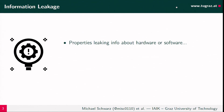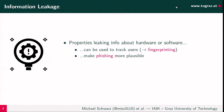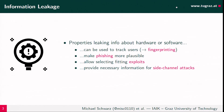What happens if properties in JavaScript do leak information about hardware or software? We can use that to track users and see their environment configuration across websites. We can also make phishing more plausible — phishing dialogues that know exactly what OS, browser version, extensions, CPU, and graphics card you have can be quite convincing. It also allows fitting exploits to the user and provides information for side channel attacks.